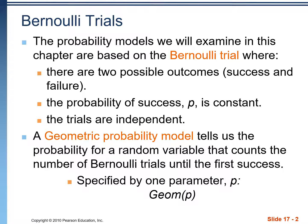Geometric and binomial probability models are both classified as Bernoulli trials because they meet a certain set of three criteria. The first criteria is that there are only two possible outcomes, referred to as a success and a failure. The second criteria is that the probability of success — we use p as the variable — remains constant throughout these trials.